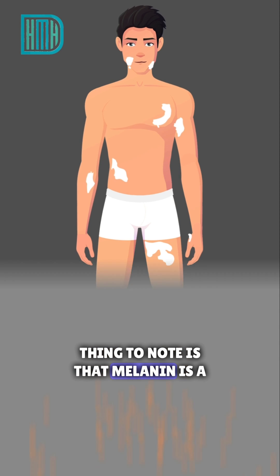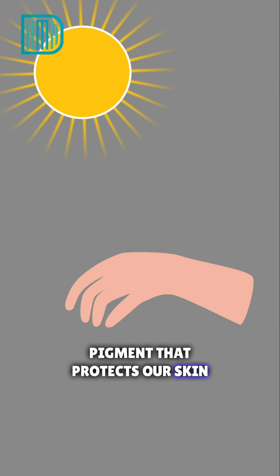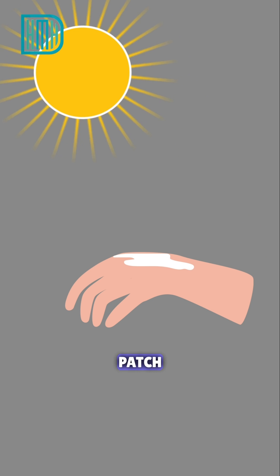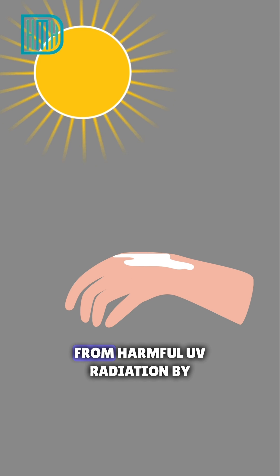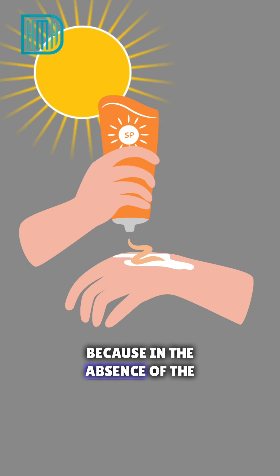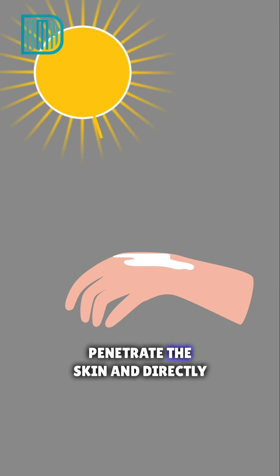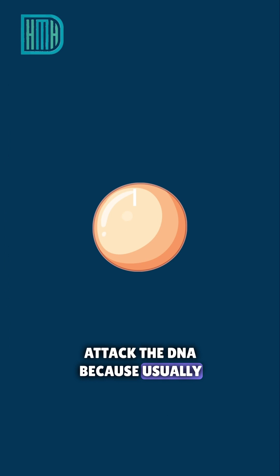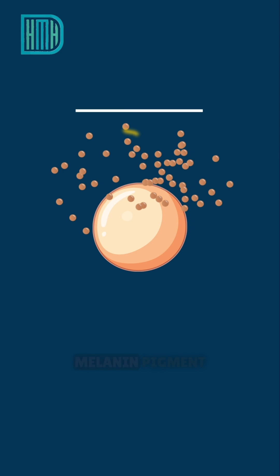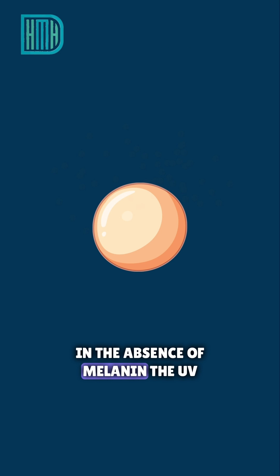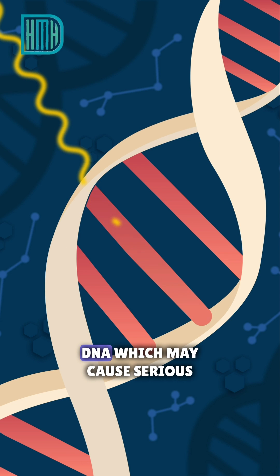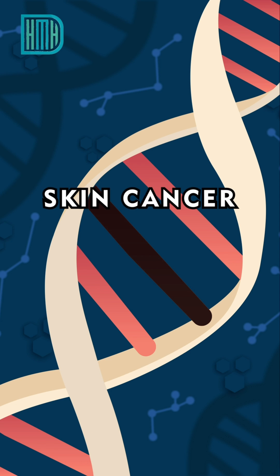An important point is that melanin protects our skin from UV radiation. Since vitiligo patients lack melanin on the white patches, those areas must be protected from harmful UV radiation using sun protection. Without melanin, UV radiation can directly penetrate the skin and attack the DNA in the nucleus — DNA that is normally shielded by melanin — potentially causing serious skin conditions such as skin cancer.